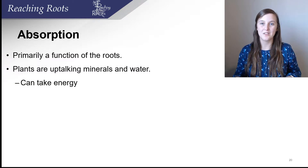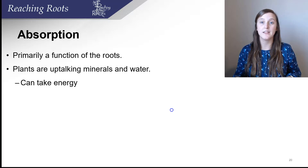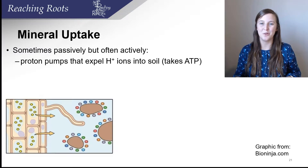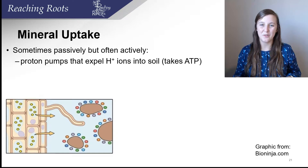Water is absorbed through the plant roots, mainly through the root hairs, which we learned about previously in the plant root biology lecture. In addition to water, plants also uptake minerals, and that process can sometimes take energy. Some minerals enter the plant passively, which means it does not take energy. But sometimes the plant needs to actively pursue getting the minerals into the plant. When something is said to be active, it takes ATP, which is created in the light reactions of photosynthesis, and the plant also gets it through cellular respiration.